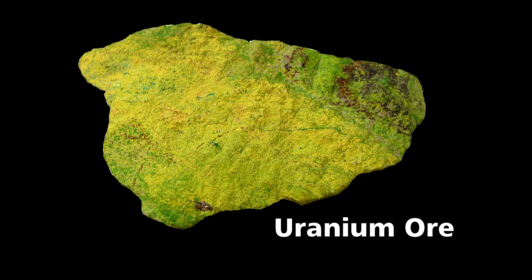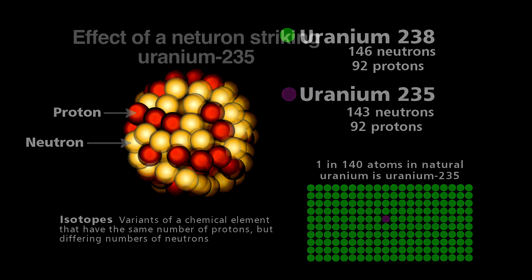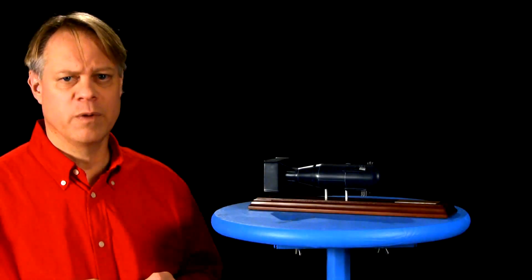Natural uranium occurs as a metal ore, and it contains primarily two isotopes. Most uranium is U-238. U-235, however, can easily sustain a chain reaction that releases tremendous energy, whereas the more common U-238 will not.